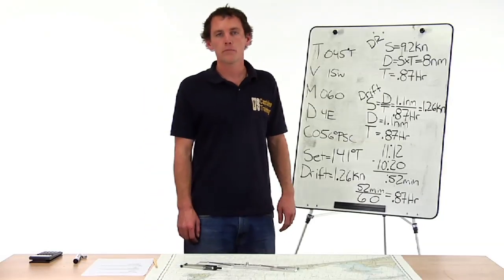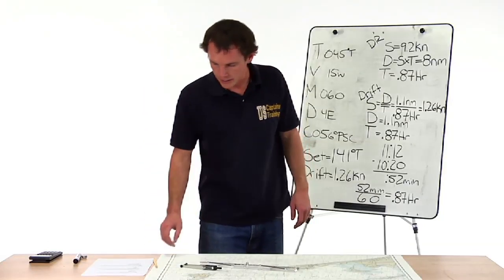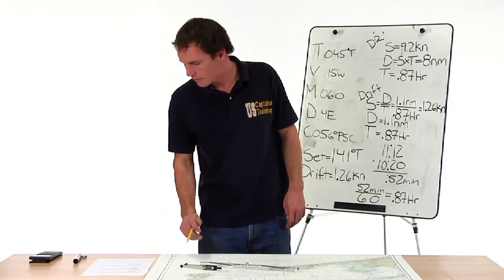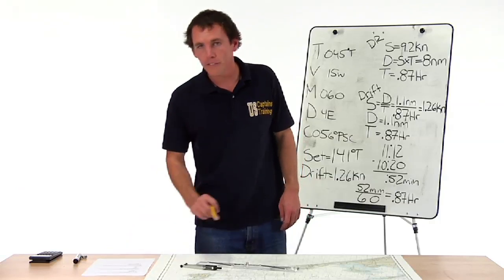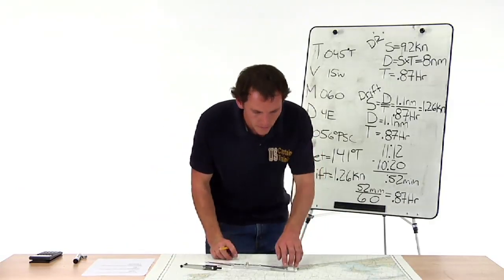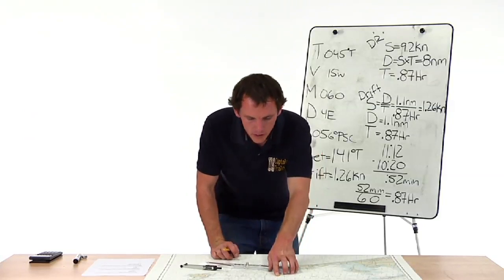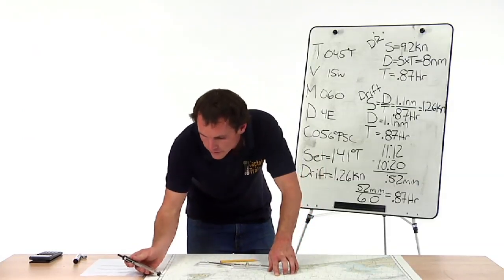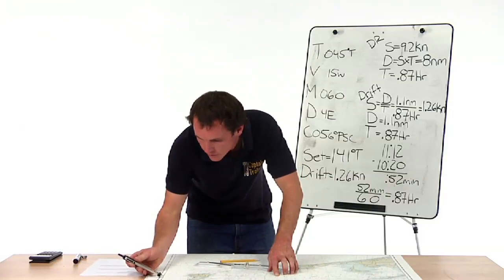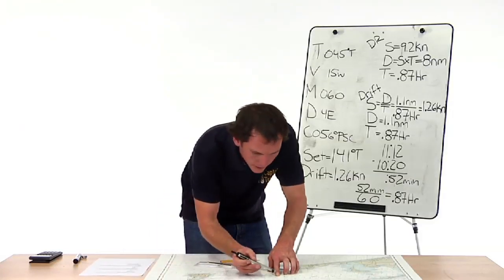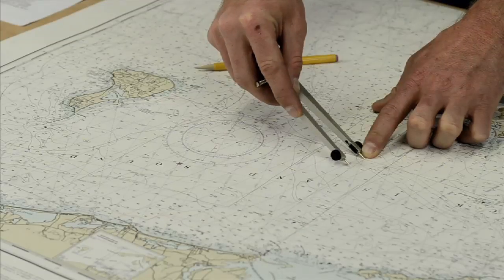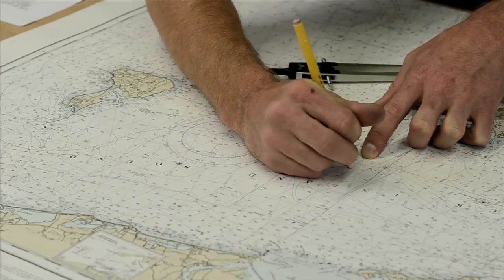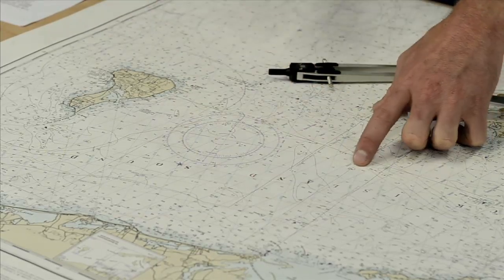Let's start off by finding our position. It gave us a starting position: 41°11' north, 71°50' west. 71°50' west is a meridian marked on the chart here. So we get 41°11' north and mark it on this meridian at 71°50'. Make a mark — this is our starting point.